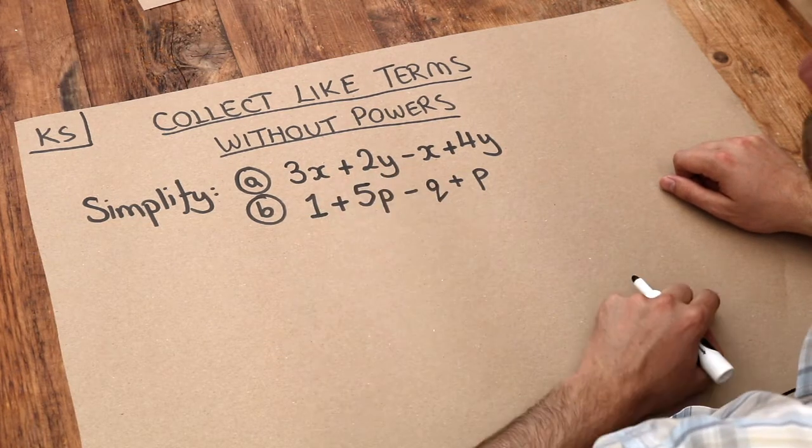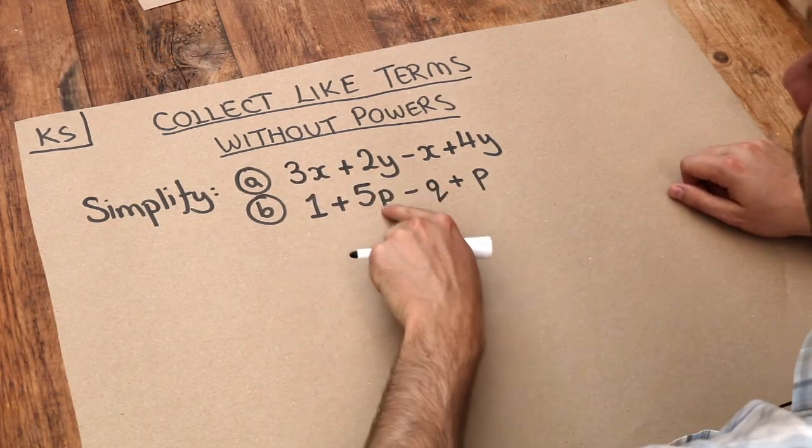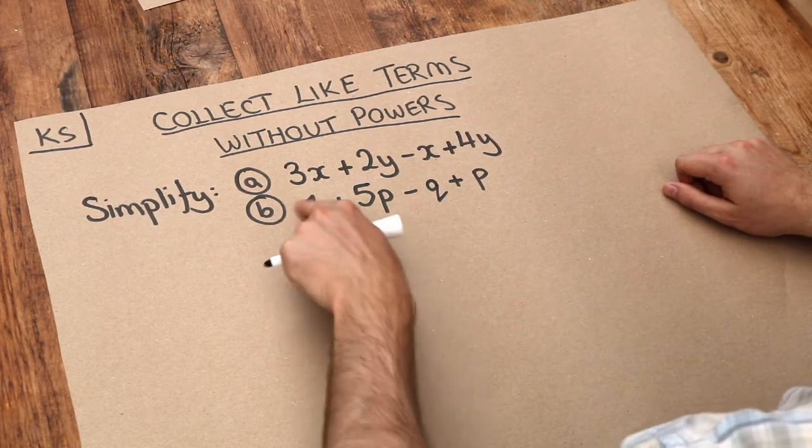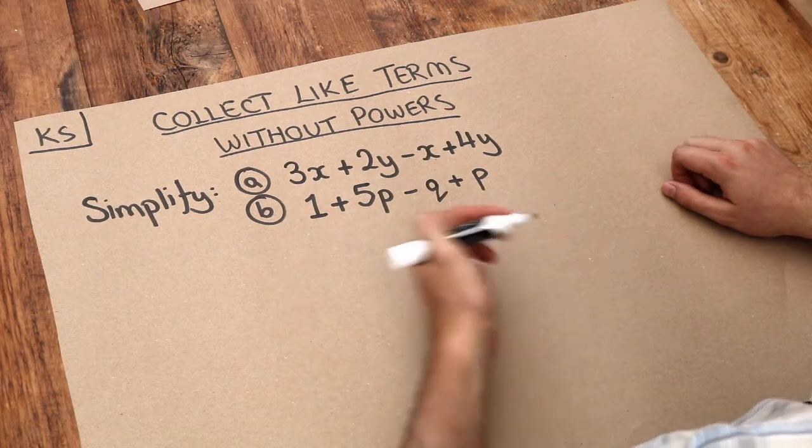So we've got x and y here, and in this second one we've got a p term, a q term, and we've even got a term which doesn't have a letter in it, this one here which is known as a constant.